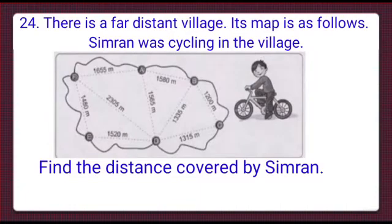Here is question number 24. There is a far distant village and its map is as follows. Simran was cycling in the village. Find the distance covered by Simran.